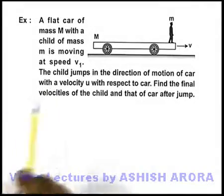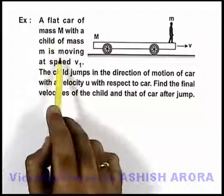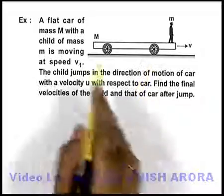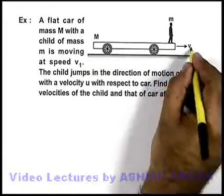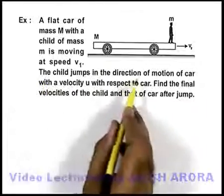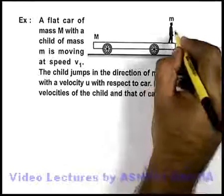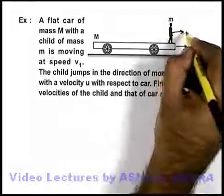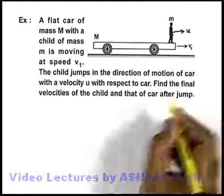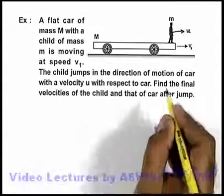In this example, we are given a flat car of mass capital M with a child of mass small m moving at speed v1. The flat car is moving at speed v1, and it is given that the child jumps in the direction of motion of the car with a speed u with respect to the car. So the boy jumps off with a speed u, which is relative to the car, and we are required to find the final velocities of the child and that of the car after the jump.